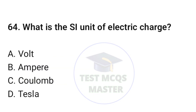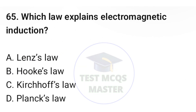Question number sixty-four: what is the SI unit of electric charge? The correct option is C, coulomb. Question number sixty-five: which law explains electromagnetic induction? The correct option is A, Lenz's law.